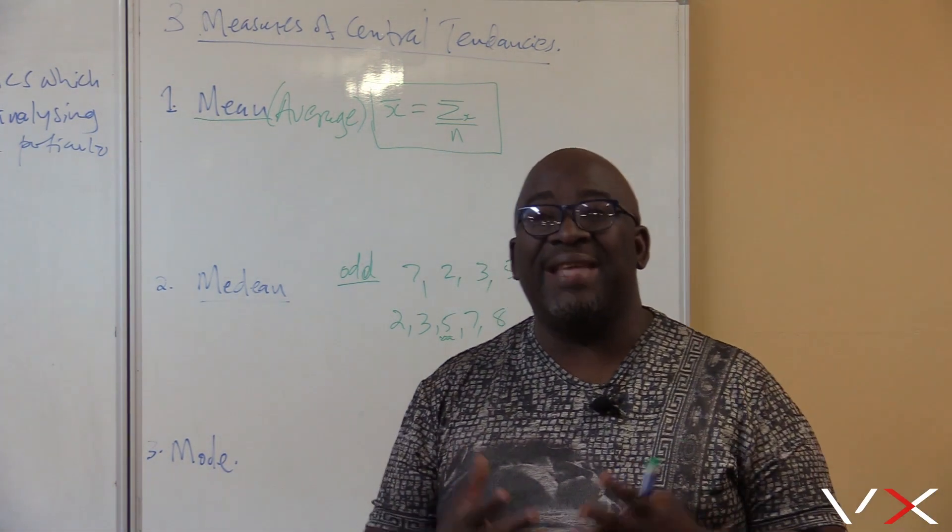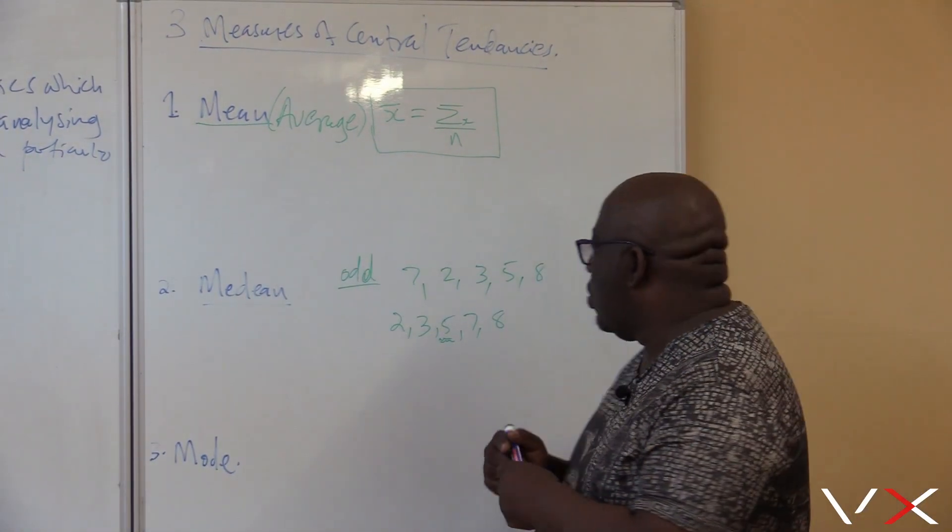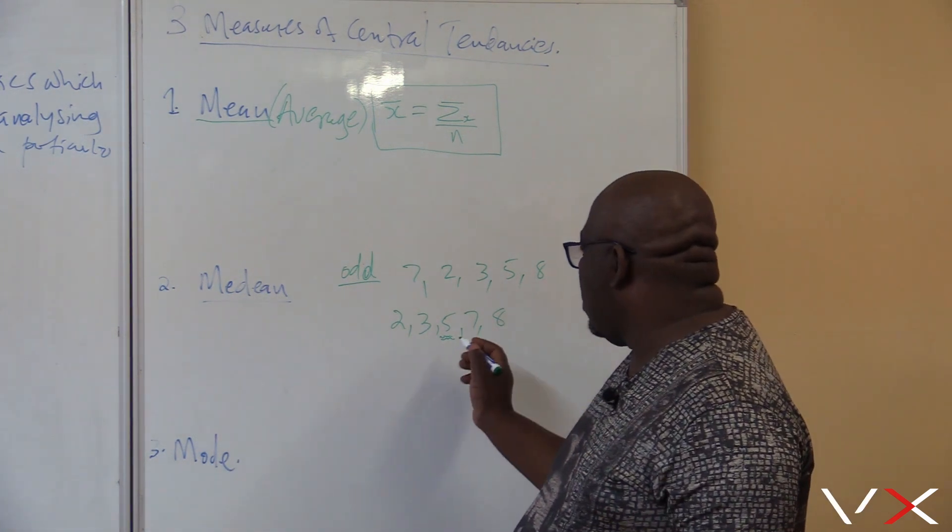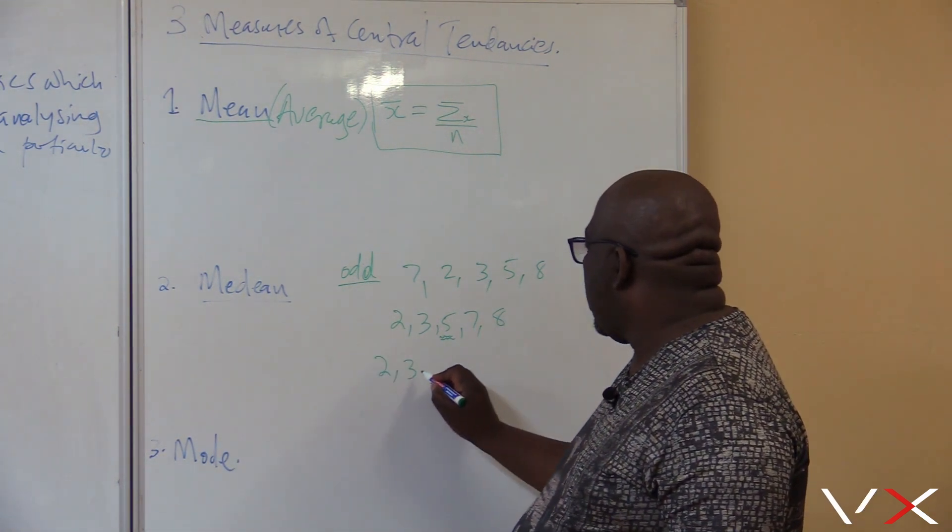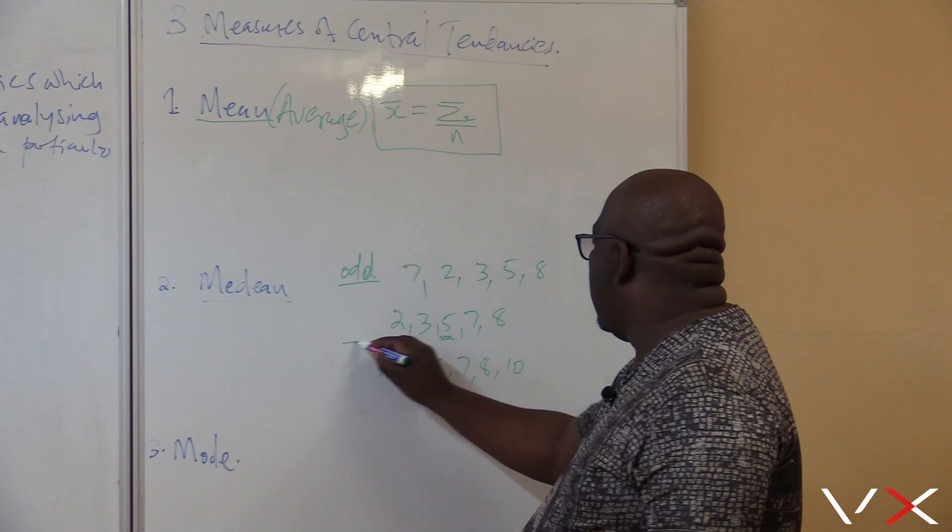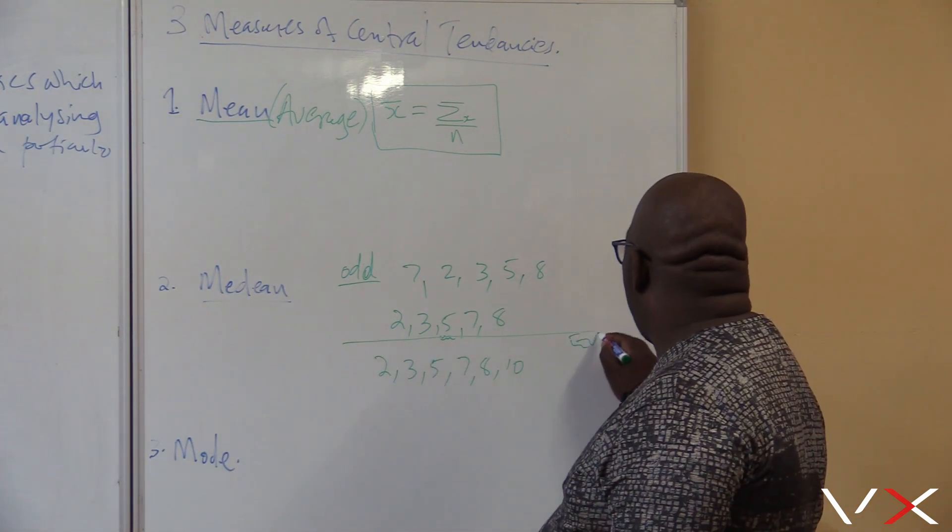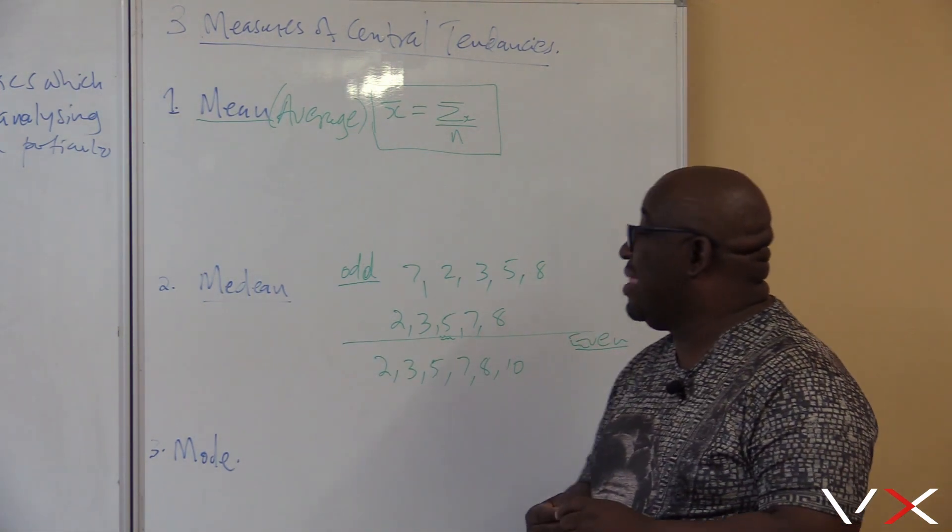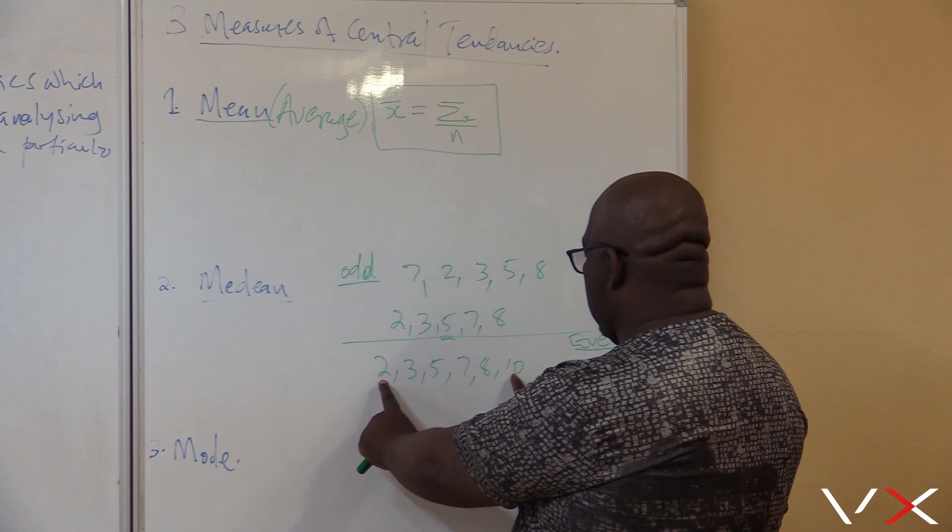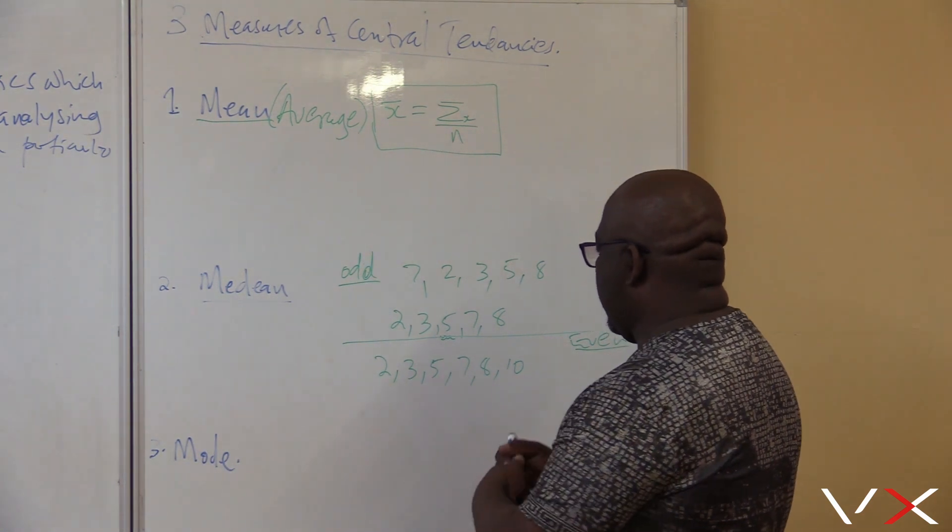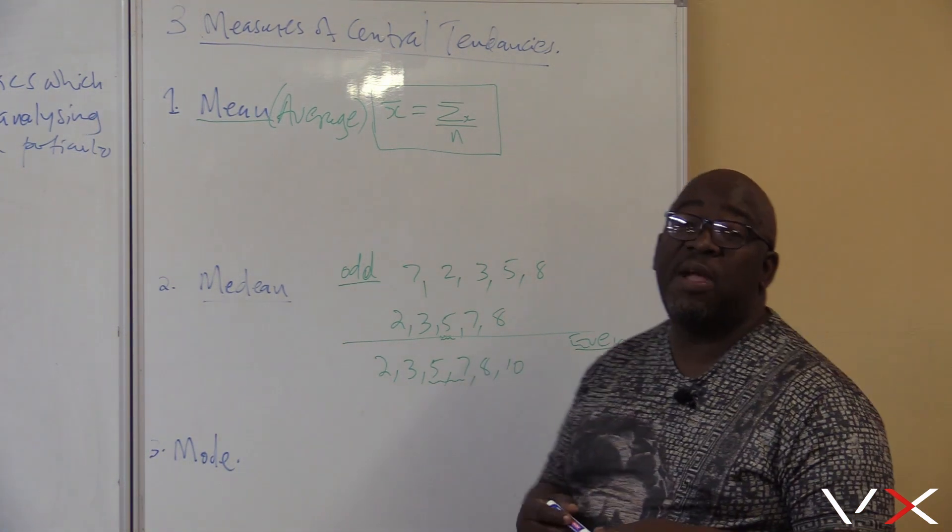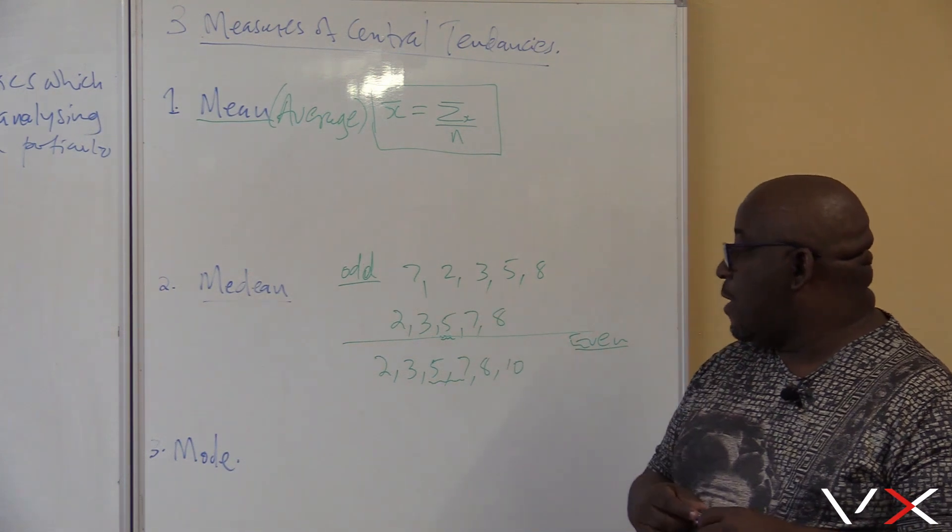Now, what do we do if our data is even? If our data is even, this is what we do. Let's take an example of an even data. Let me use the same data that has already been arranged. It's 2, 3, 5, 7, 8, 10. Let's look at this data. This one is even. How do you deal with data that is even if you are looking for the median? You do the same thing. You move from there. It's 1, 2, 3. This is the 2 because the data is even. You add this 2, you divide by 2 to get your actual median.